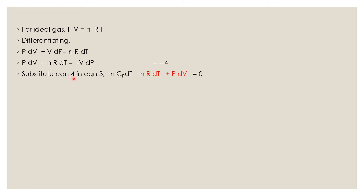Substituting equation 4 into equation 3, we can replace p·dV minus n·R·dT with minus V·dp from equation 4. So we get n·Cp·dT minus V·dp is equal to zero, which gives n·Cp·dT is equal to V·dp — equation 5.